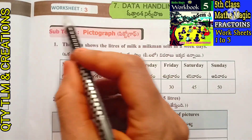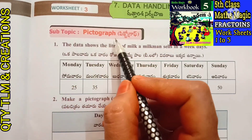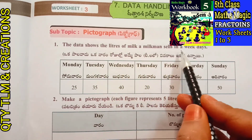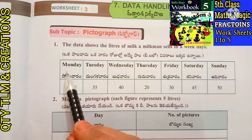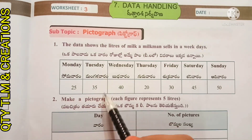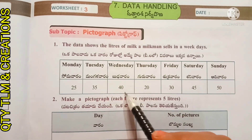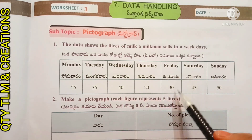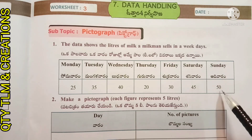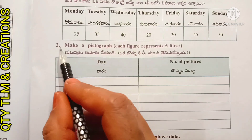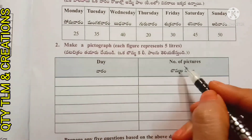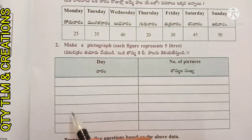Next, Worksheet 3. Subtopic: Pictograph. The data shows the liters of milk a milkman sells on weekdays. Monday: 25 liters, Tuesday: 35 liters, Wednesday: 40 liters, Thursday: 20 liters, Friday: 30 liters, Saturday: 45 liters, and Sunday: 50 liters. Now make a pictograph showing the day and number of pictures.